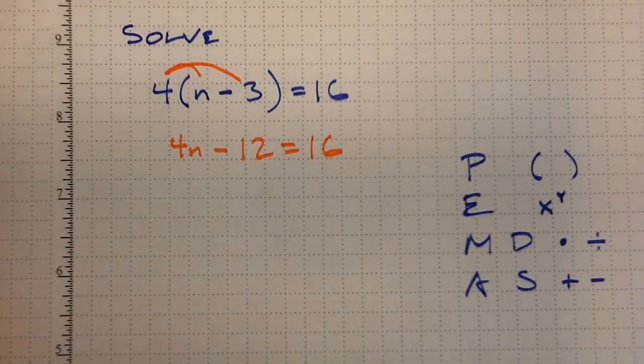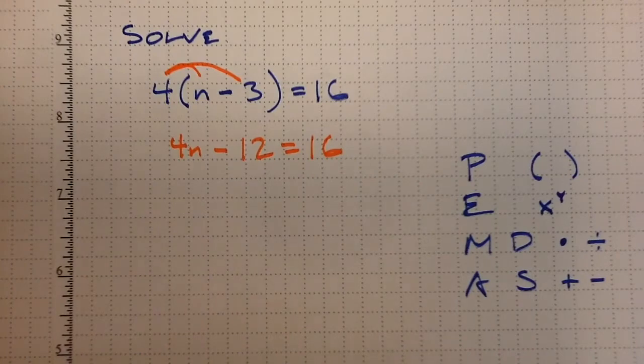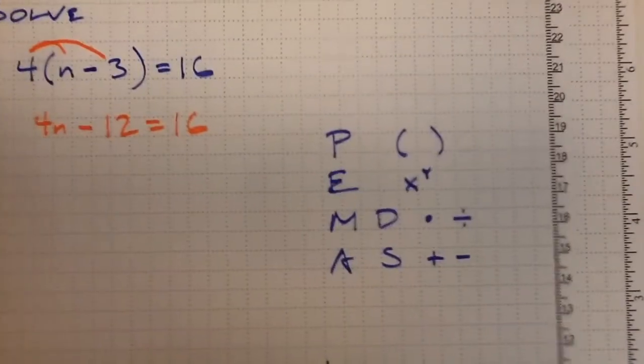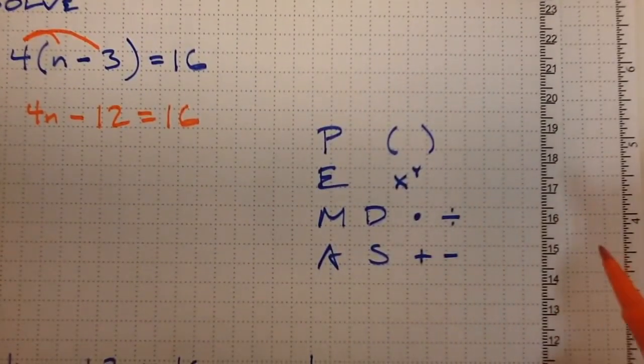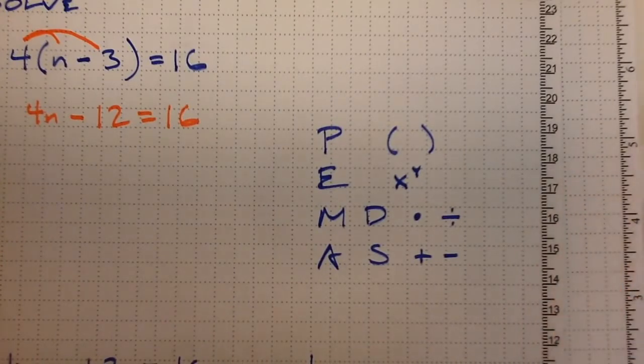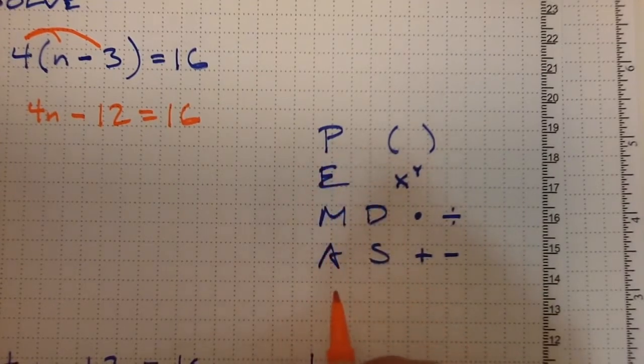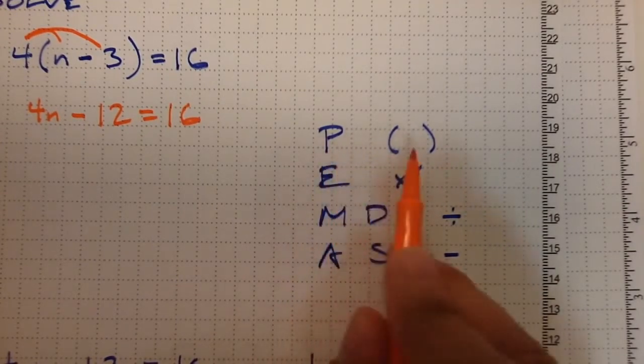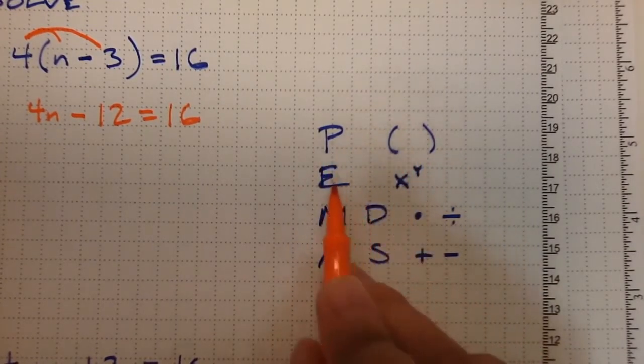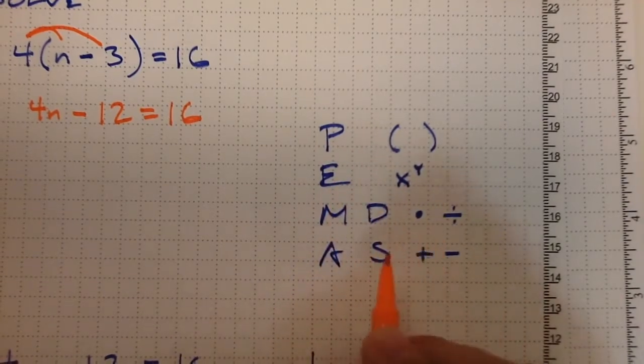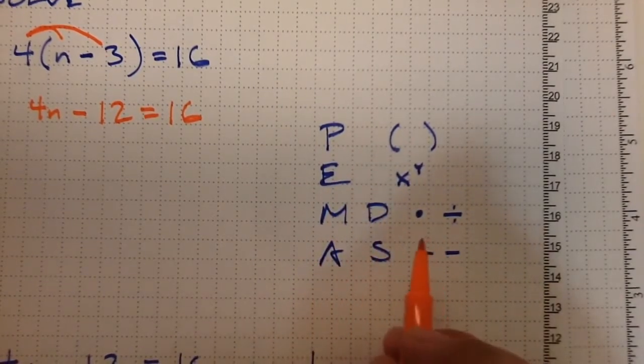Well for that, we have the order of operations. When we used to do math problems, not equations, but just straight math problems, we were told that these operations had to be done in a specific order. Anything in parentheses had to be dealt with first, then exponents, then multiplication and division, then addition and subtraction.